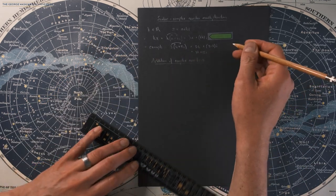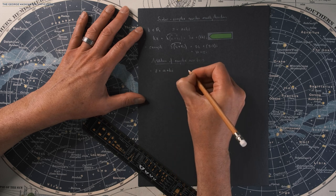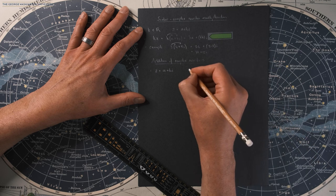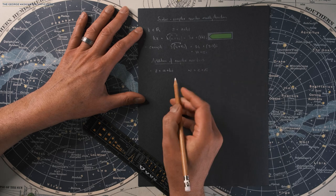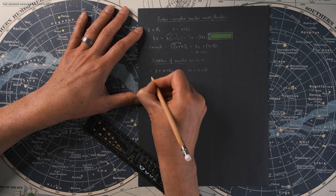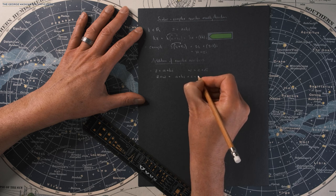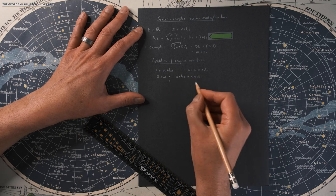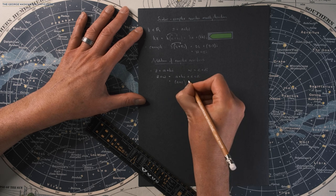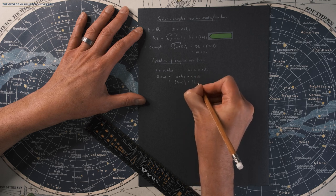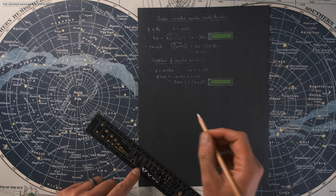Let's look at the addition of complex numbers. We're going to have two complex numbers: z equals a plus b times i, and w — another common variable — equals c plus d times i. Remember, c and d are both real numbers. We define z plus w as a plus bi plus c plus di, and grouping the real parts and imaginary parts, that gives us (a + c) plus (b + d) times i.